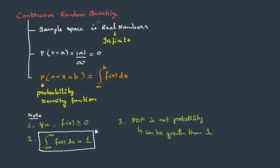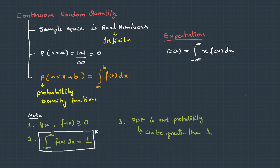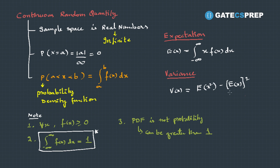Even for continuous random variables, we try to find out two metrics: one is expectation, and the second one is variance. The formulas are very similar. Expectation, also called mean, is: integral of x·f(x) dx from negative infinity to positive infinity. The next is variance, where V(x) = E[x²] − (E[x])². Alright, this is enough to start with the problems.